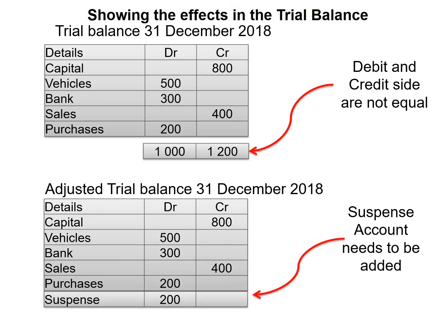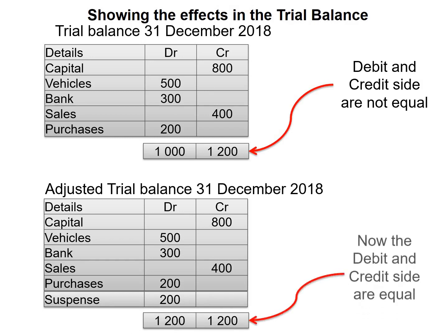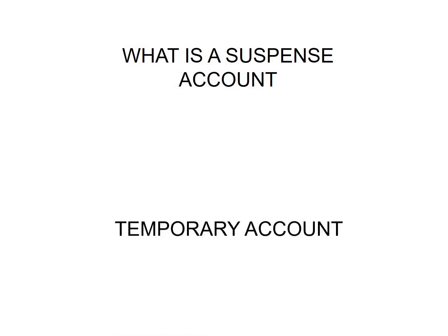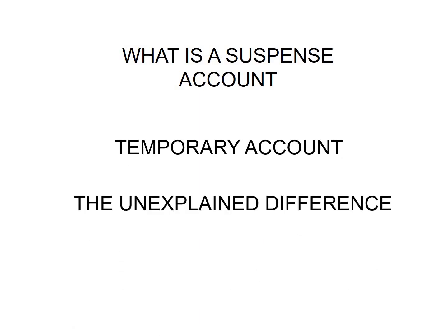We need to adjust our trial balance, and we will add a suspense account. A suspense account needs to be added, and the amount will be $200. Once we add that, our trial balance will balance — the debit and credit side are equal. A suspense account is a temporary account where you will have an unexplained difference. If the totals of the trial balance have a difference, then you will need to open a suspense account for that difference.